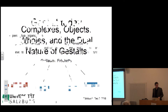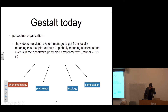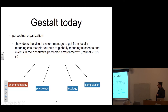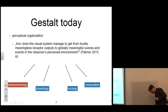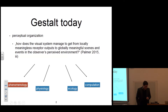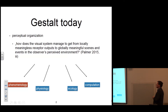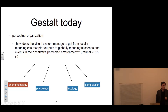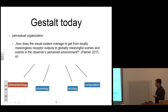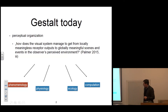When we look at Gestalt theory today, we find that it is often recognized as a theory that somehow just failed. But some psychologists and experimental psychologists remain interested in Gestalt and consider its importance in the framework of perceptual organization. The theories of perceptual organization want to answer the question: how does the visual system manage to get from locally meaningless receptor outputs to globally meaningful scenes and events in the observer's perceived environment? This is taken from the foreword to the Oxford Handbook on Perceptual Organization, published last year, by Palmer.